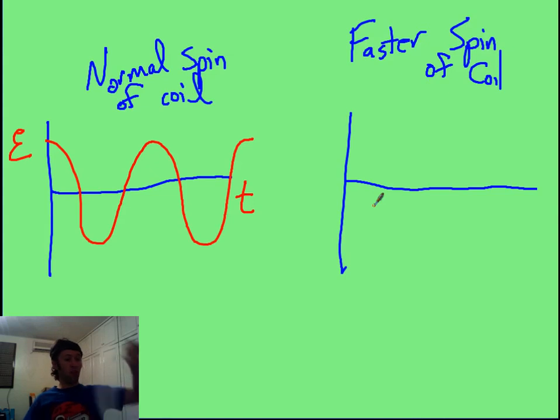If we take this coil and spin it like crazy, then you can probably guess, you are going to have a higher frequency of the EMF oscillating, or the current oscillating. But you can also think, as it goes through here, it's cutting through field lines faster. That's a faster rate of change of flux. And if you remember, from our laws on Faraday's laws, the rate of change of flux directly relates to the voltage.